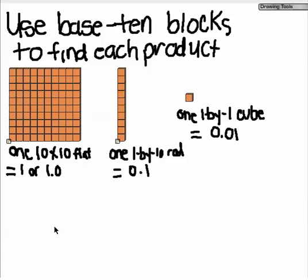We're going to model 2 times 1.3. We're going to use the base 10 blocks to make two groups of 1 and 3 tenths.